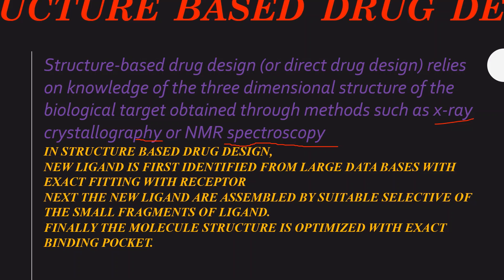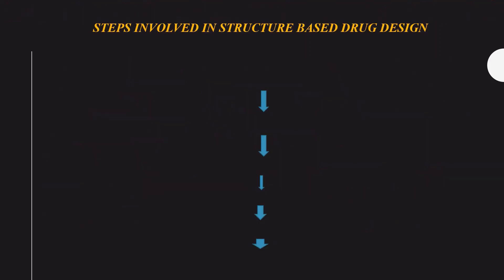In structure-based drug design, the new ligand is first identified from a large database with exact fitting to the receptor. Next, new ligands are assembled by suitable selection of small fragments of ligand. Finally, the molecule structure is optimized with an exact binding pocket. The protein structure — receptors and enzymes — is where the drug is combined. When the drug is combined with the receptor, it is called the lock and key model: the protein is the lock and the drug is the key.